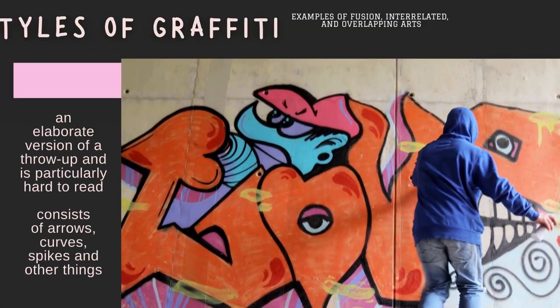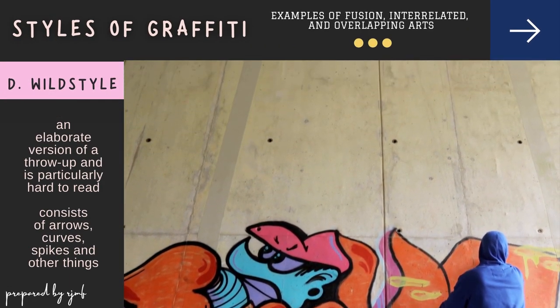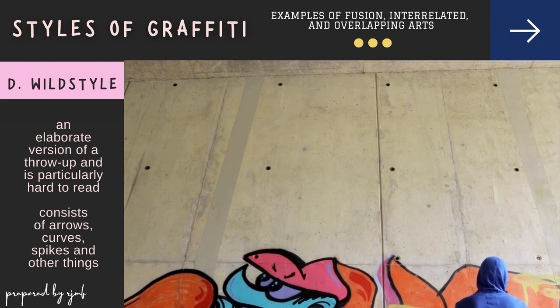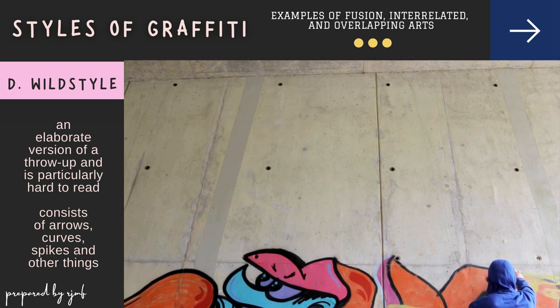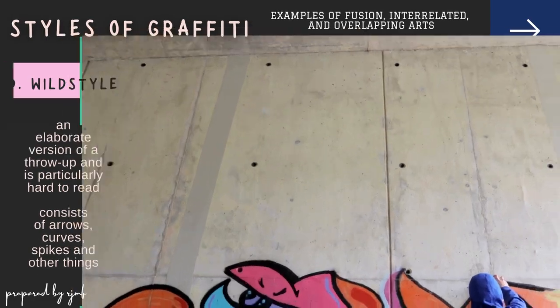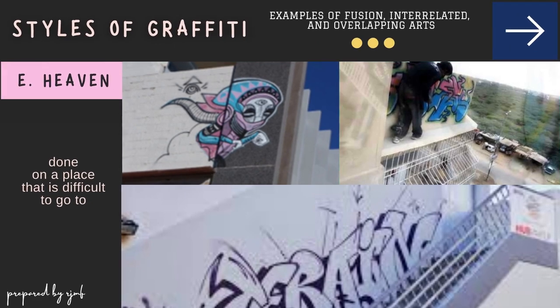Wild style is an elaborate version of a throw up and is particularly hard to read. It often consists of arrows, curves, spikes, and other things that non-graffiti artists might not understand. The last type of graffiti is heaven — a tag that is done in a place that is difficult to reach. Graffiti artists who are able to produce a heaven style of graffiti usually gain respect from the other artists.